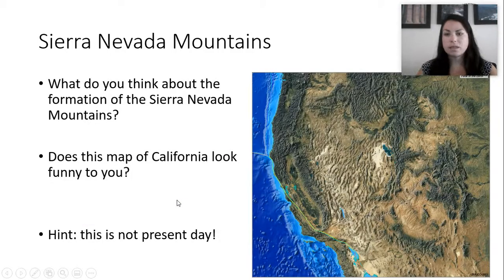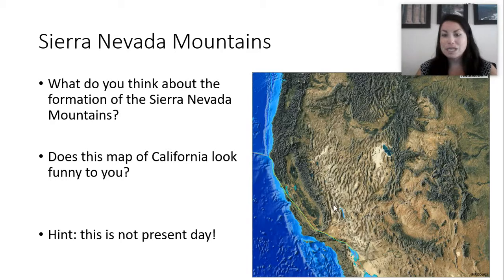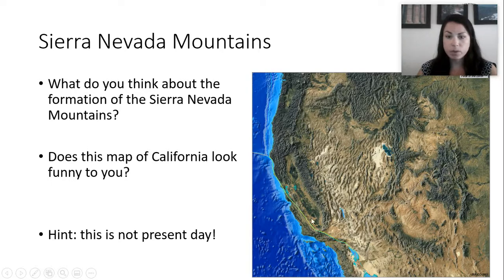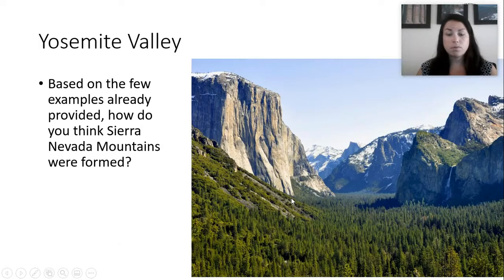Let's take a look at the Sierra Nevada mountains in central California. What do you think about their formation? Does this map look a little different than what you've seen on other maps? That's because this map isn't of present day. If we look at this map, we can see Baja California, the San Andreas fault as a line here, and roughly the Bay Area. We can see how everything's kind of crammed together, and that's because of how the Sierra Nevada mountains were formed.